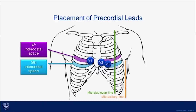Lead V1 is positioned to the right of the sternum at the fourth intercostal space. V2 is to the left at the fourth intercostal space. V4 is at the mid-clavicular line in the fifth intercostal space, and V6 is at the mid-axillary line.